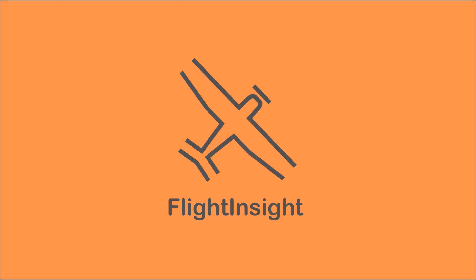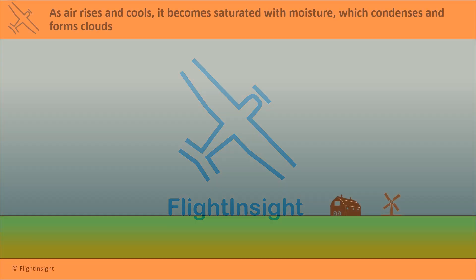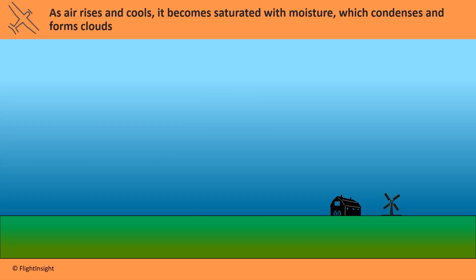Let's look at what happens to air when we consider its moisture content. The sun heats the ground and causes thermals of warm air to rise up. As air rises and cools, it becomes saturated with moisture, which condenses and forms clouds.